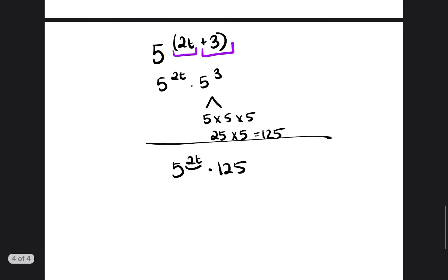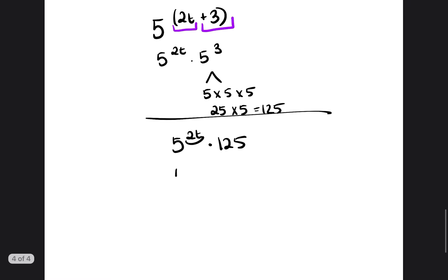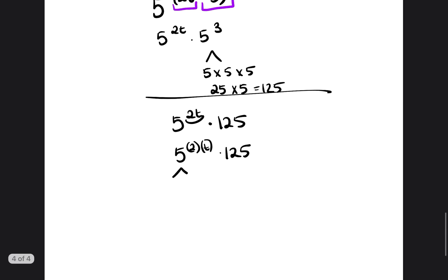Then we're going to go ahead and break apart this 2t. So 5 to the 2nd power and 5 to the t power times 125. 5 to the 2nd power is just 5 times 5. 5 times 5 is 25. So we have 25 to the t times 125.